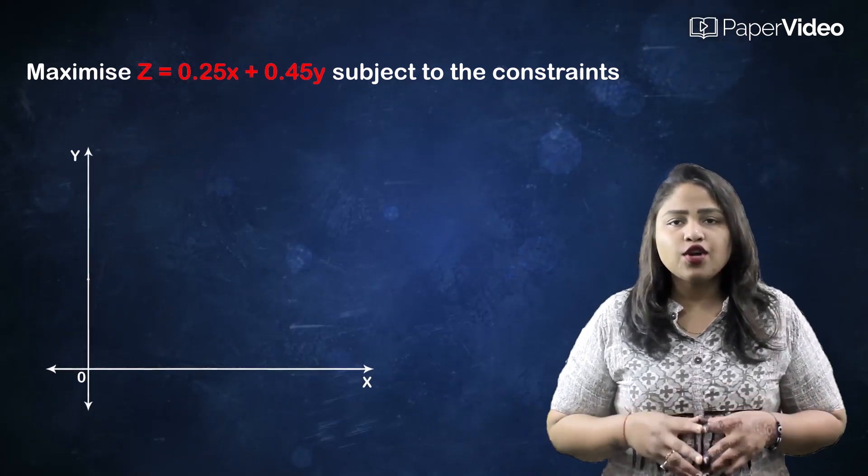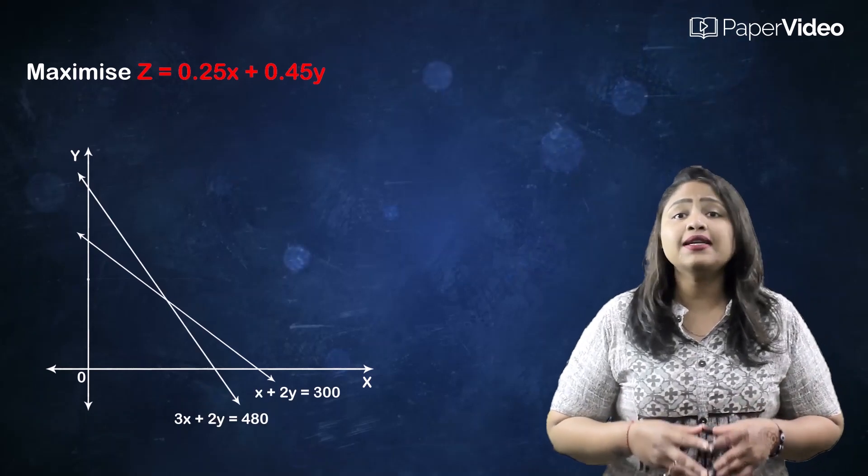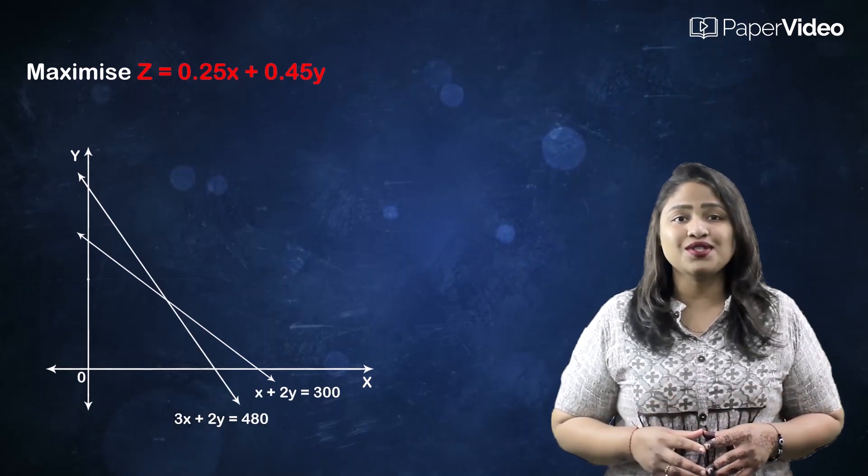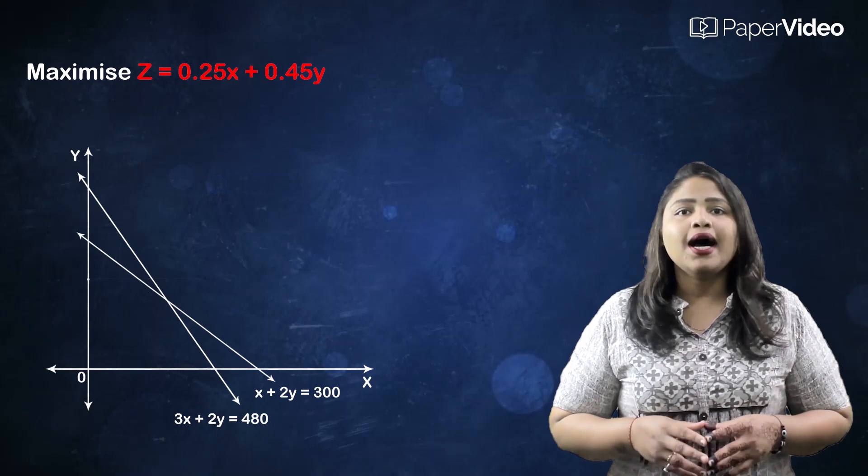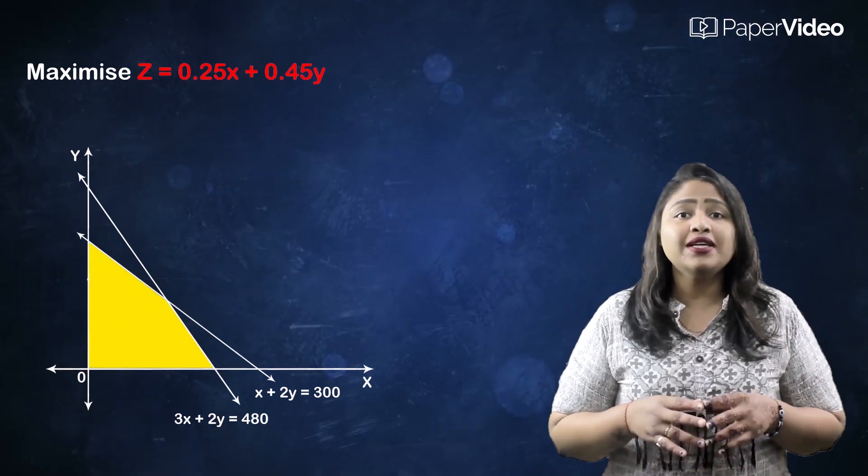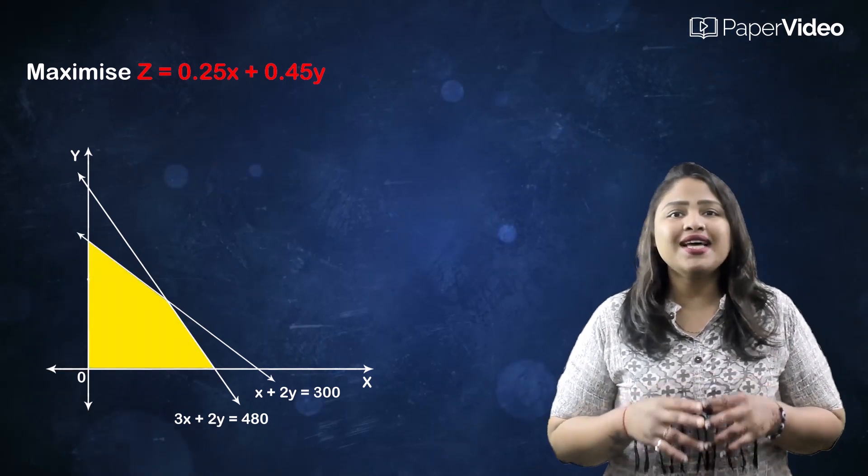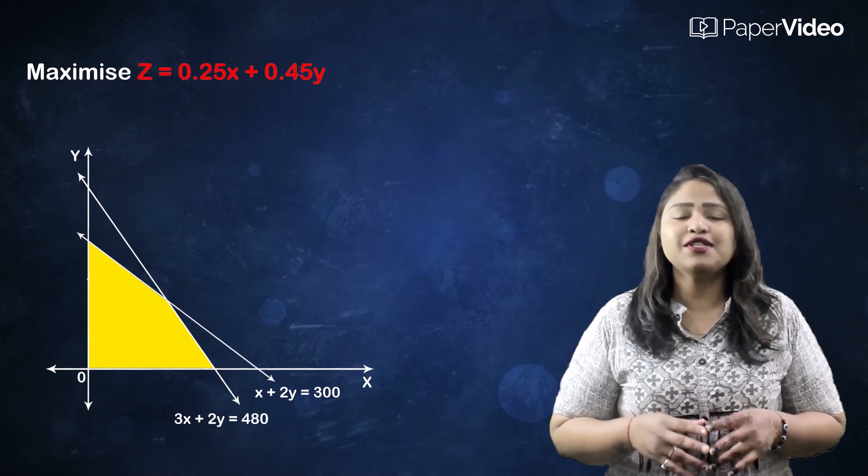Step 1: Graph the constraints using the graphical method as discussed in the previous videos. Step 2: Identify the feasible region of the linear programming problem which satisfies all the constraints simultaneously.